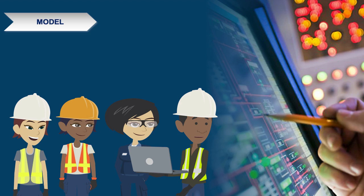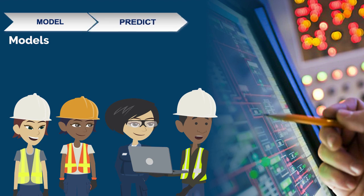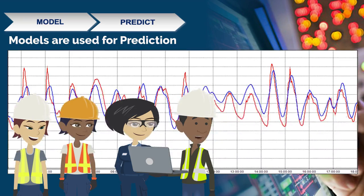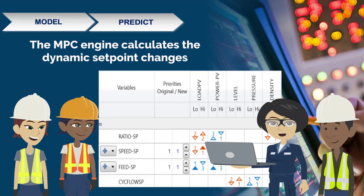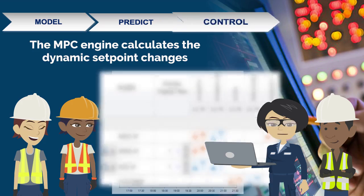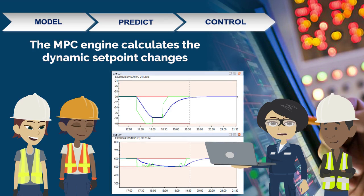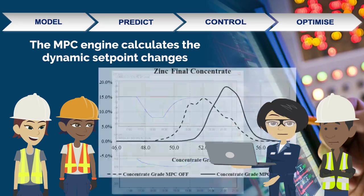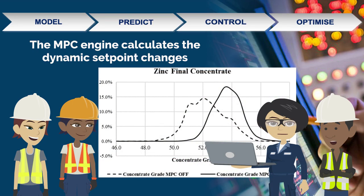Because the models are dynamic, they look into the future. This is a rarity on a process plant. The MPC engine calculates the dynamic set point changes to move the process safely to the optimum point. So the MPC calculates where to go and how to get there, all without operator intervention.